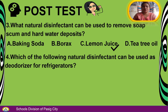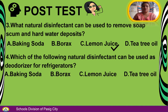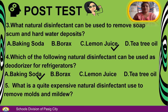Number 4: Which of the following natural disinfectants can be used as a deodorizer for refrigerators? A. Baking soda. B. Borax. C. Lemon juice. D. Tea tree oil. The answer is A — Baking soda.